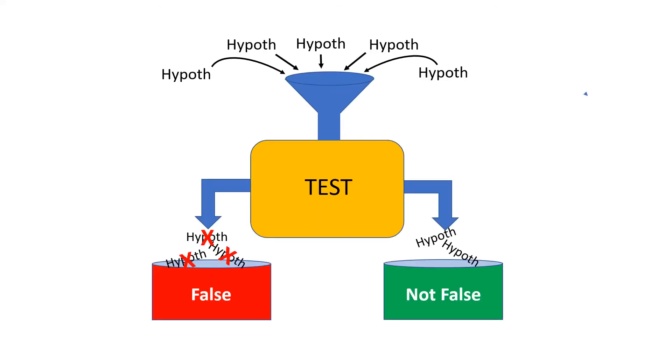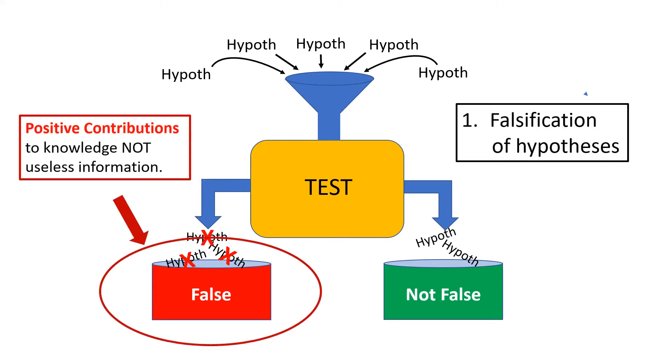Let's start with hypothesis testing. This is our by now familiar hypothesis testing machinery of science. This is where hypotheses go into the big hopper. They are then rigorously tested and sorted into bins of either falsified or not falsified hypotheses. But as I've mentioned earlier, falsifying hypotheses makes positive contributions to knowledge. This is not useless information.